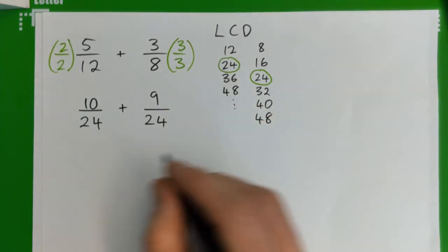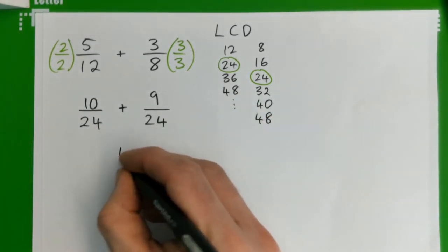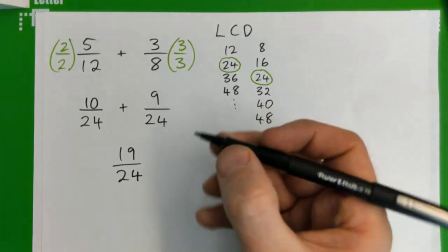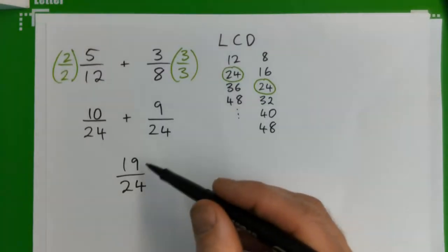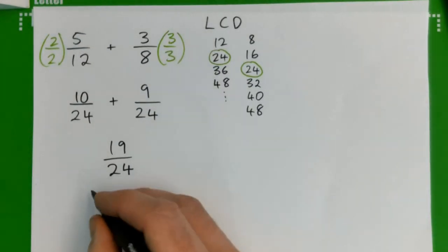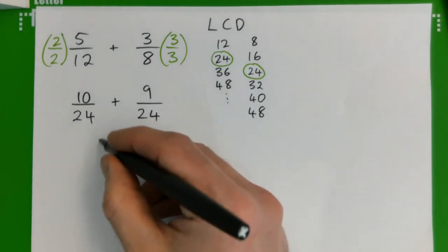So we have 10 24ths plus 9 24ths. And if we add them, that's 19 24ths. And can we simplify this? We can't simplify this further. So that's our final answer there.